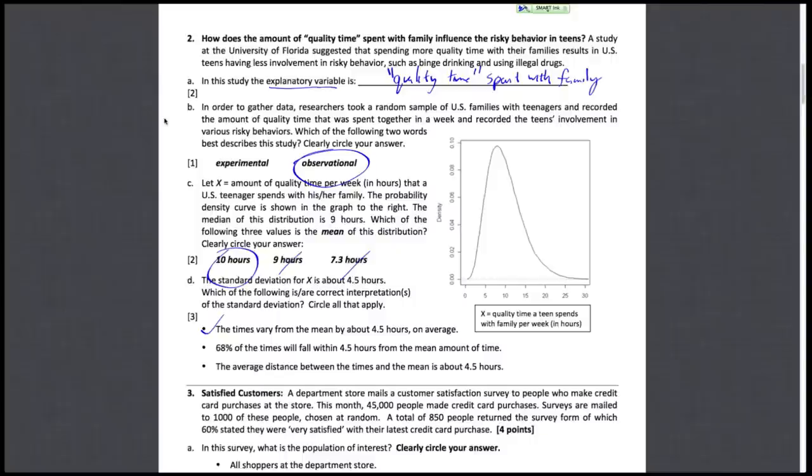Next, 68% of the times will fall within 4.5 hours from the mean amount of time. So this one would be true if it were a normal distribution. But this distribution, we can see, is not normal. So this one's not good.